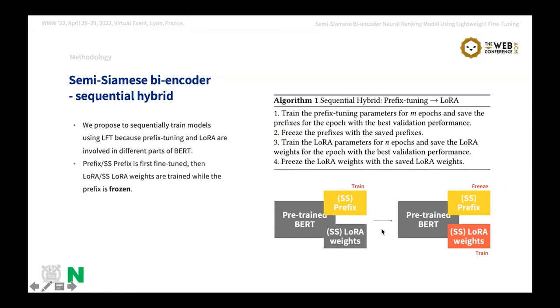Because prefix tuning and Lora are involved in different parts of transformers, we decided to apply prefix tuning and Lora in a hybrid manner. To prevent two types of weights from conflicting each other, we sequentially train LFT weights while the other weights are frozen. Here, the algorithm one shows the sequential hybrid LFT algorithm for the case where the prefix weights are firstly trained and then the Lora weights are trained.